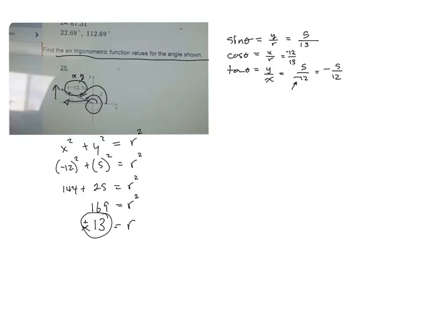And then they want the reciprocal ones. So sin and cosecant are reciprocals of each other. So the reciprocal of sin will be 13 over 5. And then the reciprocal of cos is secant. And secant will be 13 over negative 12. And then finally, the reciprocal of tan is cotan.